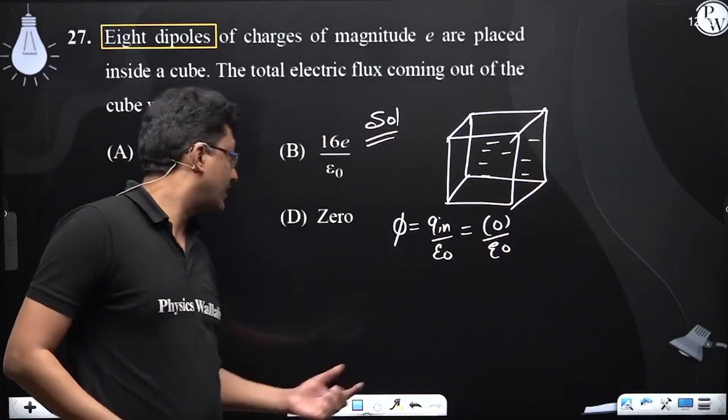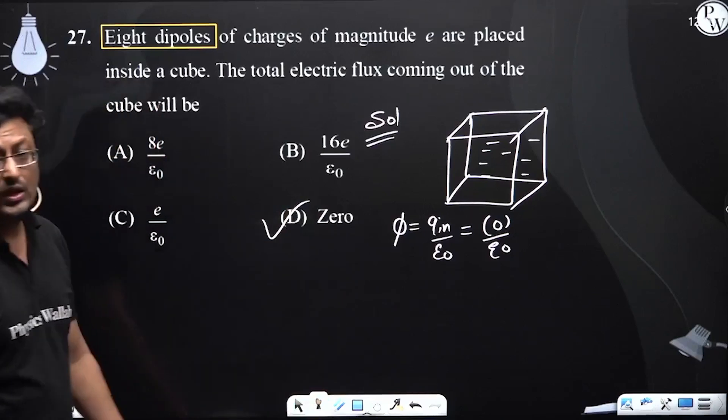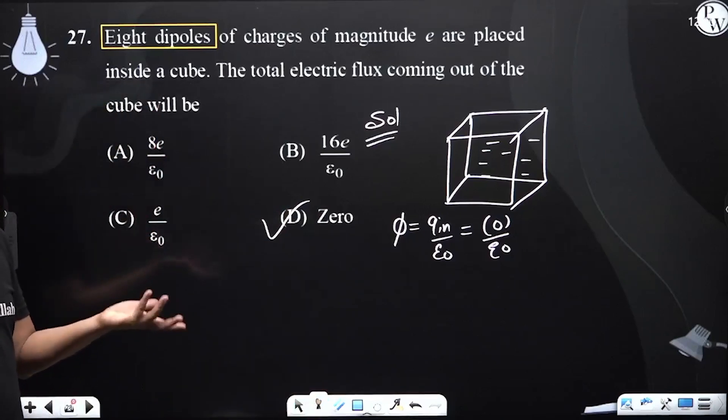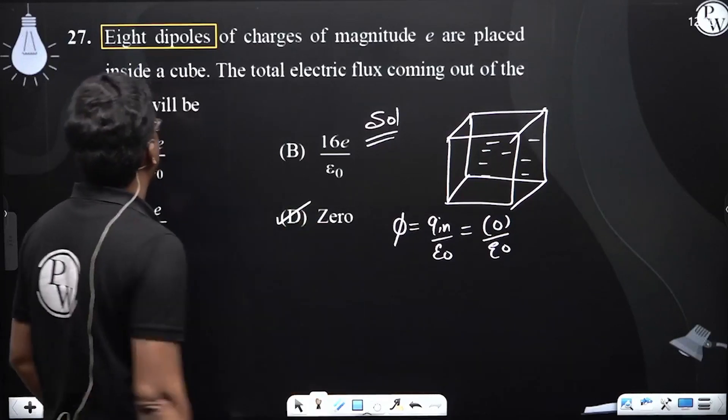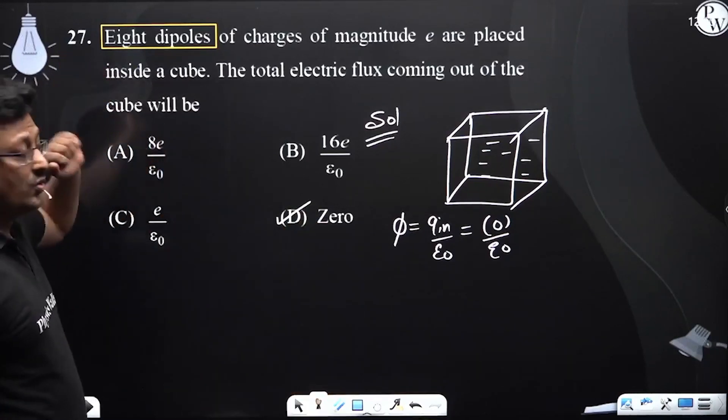It will be zero. If we talk about electric field it would be something else, but here we're talking about flux, so the option will be D for question number 27